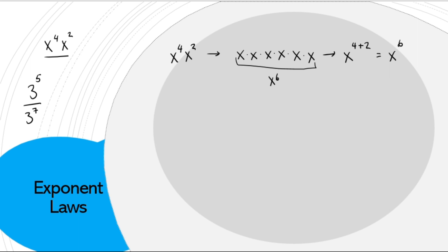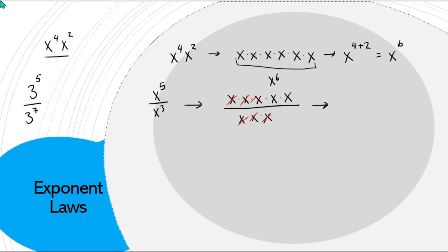For dividing, it makes sense that we have something similar. So let's say x⁵ divided by x³. We've got five x's in the numerator and three x's in the denominator. If we do old-school cancelling, we can drop x's and end up with x². That's the same as taking the exponent in the numerator and subtracting the exponent in the denominator.